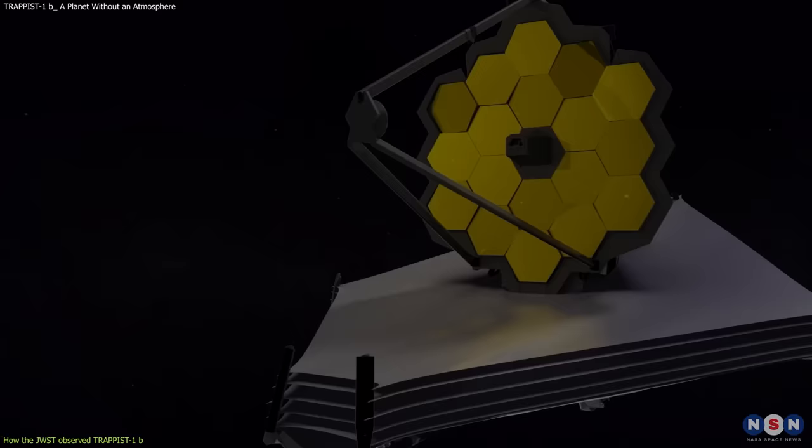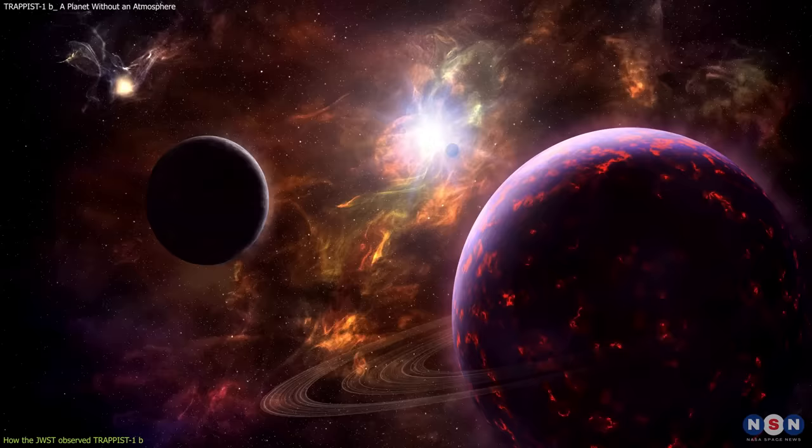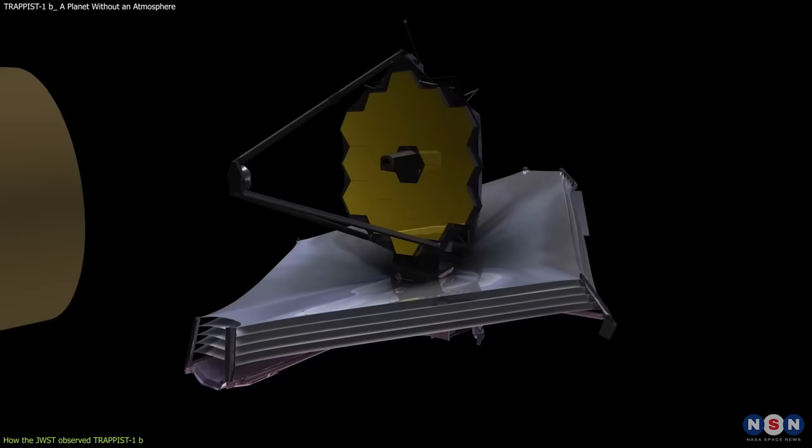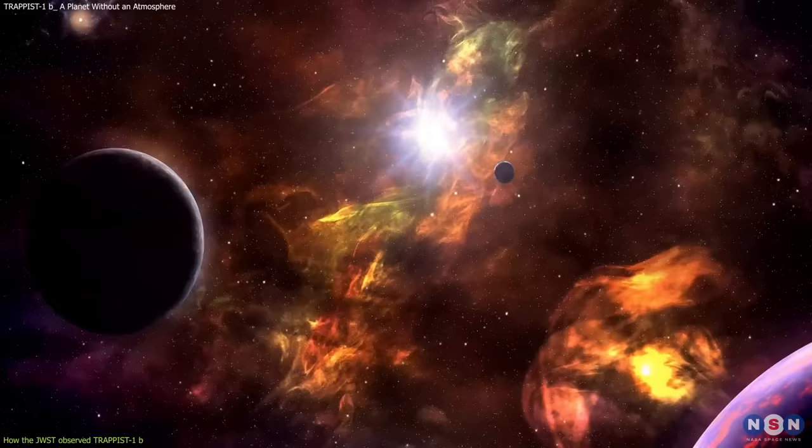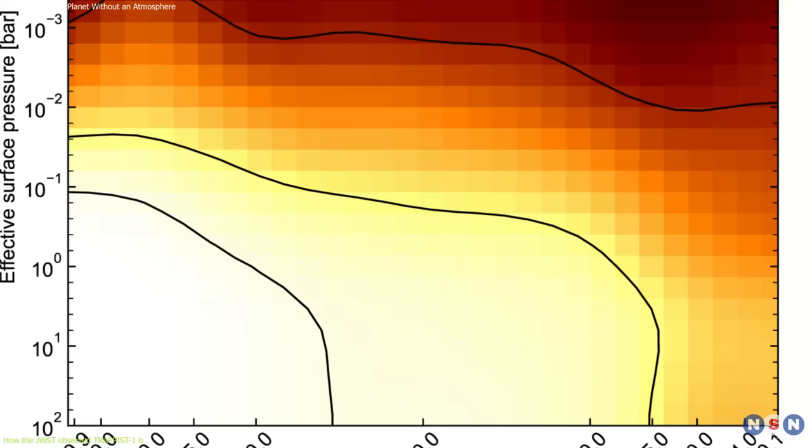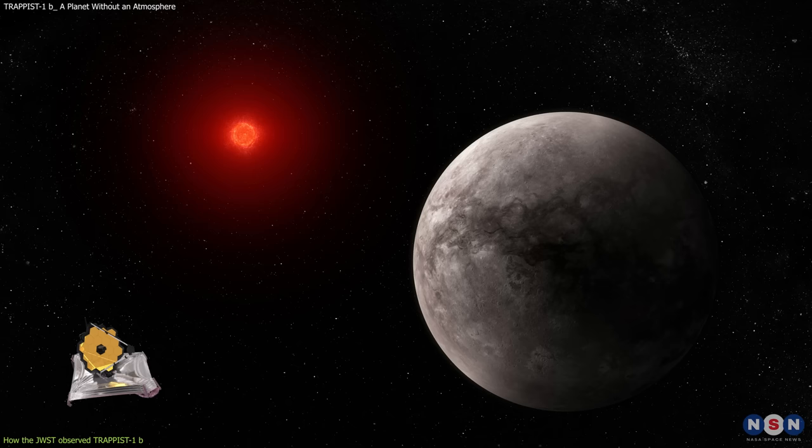James Webb is ideal for performing transit spectroscopy because it can observe exoplanets in the infrared spectrum, which is sensitive to many atmospheric features that are not visible at other wavelengths. For example, infrared light can detect water vapor, carbon dioxide, methane, ozone, and other gases that are important for life. Infrared light can also measure the temperature and pressure of the atmosphere and how they vary with altitude.